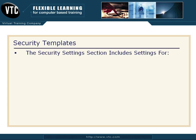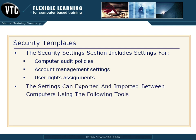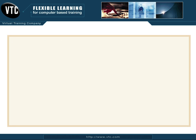The security settings section includes settings for things like computer audit policies, account management settings, user rights assignments, and so forth. These settings can be exported from a particular computer and then imported between computers or between group policy objects using tools like the group policy object editor, the local security policy editor, or the security configuration and analysis MMC snap-in.